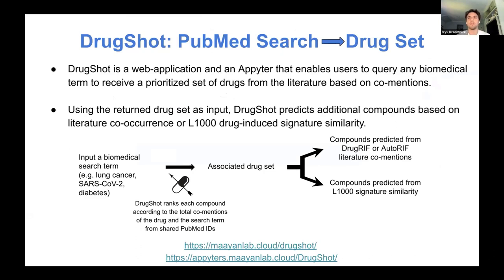Briefly, how this is done: these query terms are sent to the PubMed API, where we retrieve a list of PubMed IDs associated with the query term. DrugShot then compares these PubMed IDs to previously generated files of drug-to-PubMed ID associations, looking at co-mentions, and then outputs a list of prioritized associated small molecules.